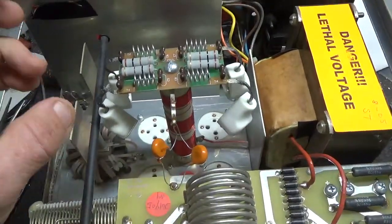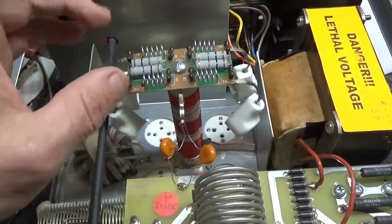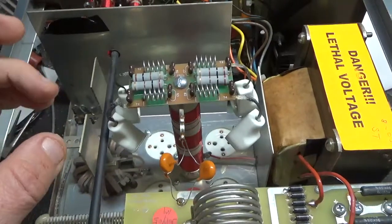I'll put in the gas discharge tubes, one per side of the filament to ground.